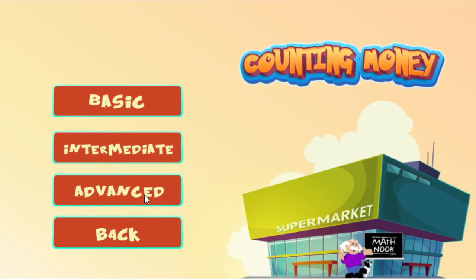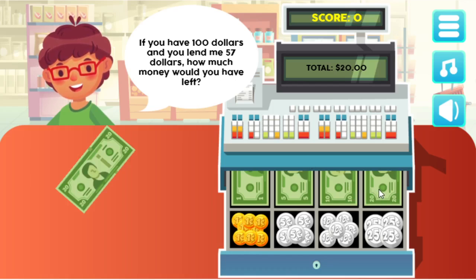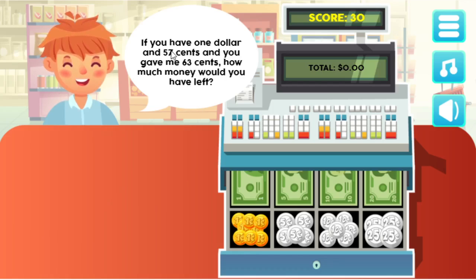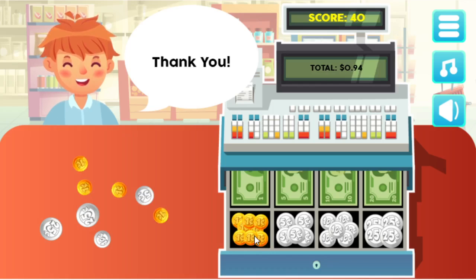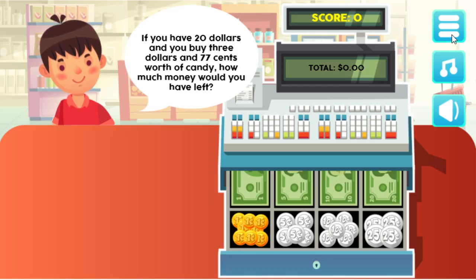Now the advanced mode — they're all word problems. He says: if you have a hundred dollars and you lend me $57, how much money would you have left? Well, that'd be $43. So let's count out $43. Now he says, if you have $1.57 and you gave me 63 cents, how much money would you have left? That should be $0.94. So you can see all the different problems you have here. The advanced level is quite a bit more advanced than the other levels, but it still involves counting out money — you just have to figure out the answer to the word problems.